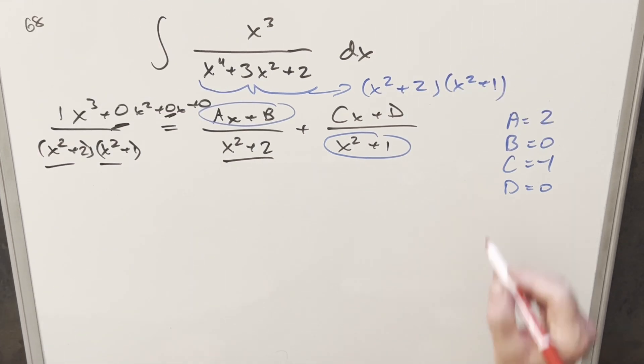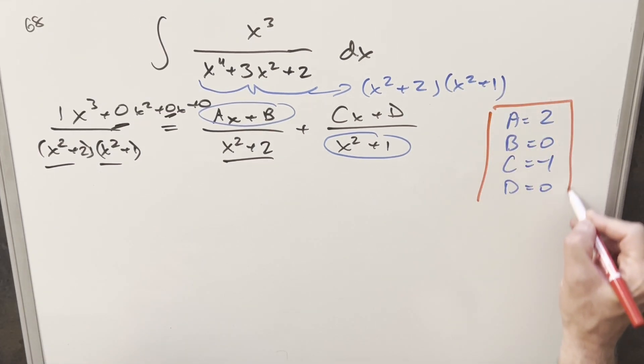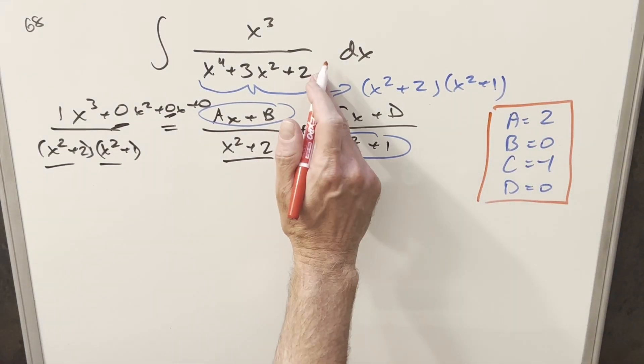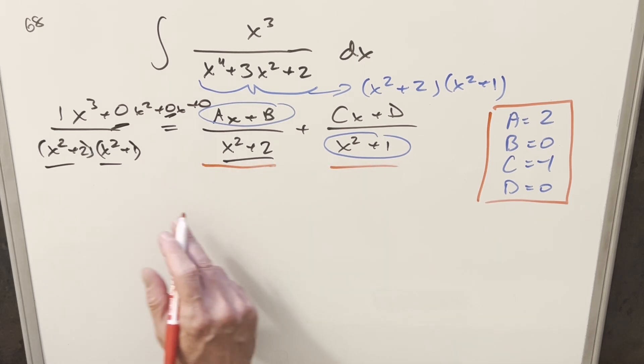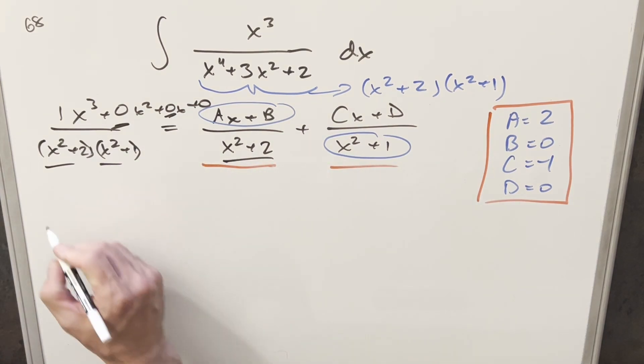So now what we need to do is just take these values here and here and plug them back in. And then we can integrate. OK, so now that we have our a, b, c, and d values over here to the right, we've taken our integral and we've split it up now into two different components, two different fractions. Then what we can do is split this into two integrals.